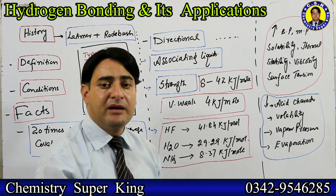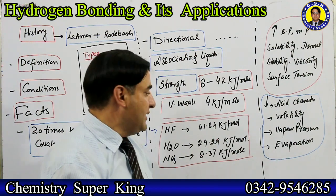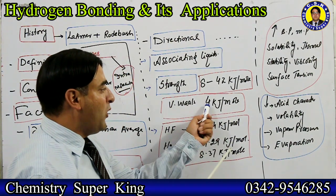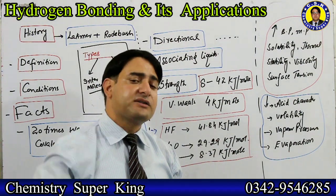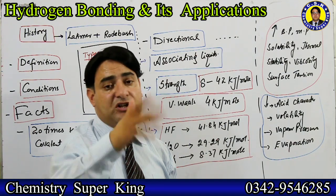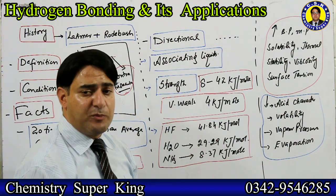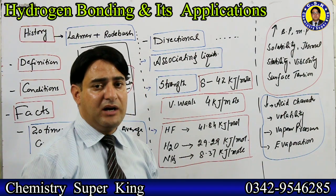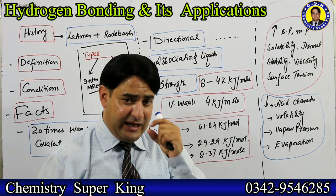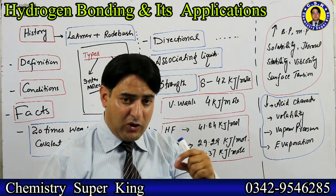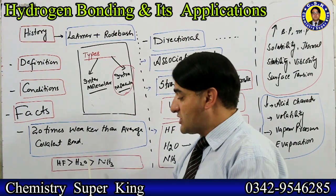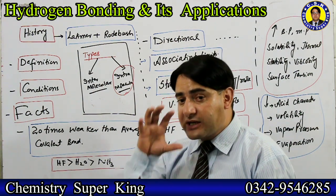Van der Waals forces require a maximum of 4 kJ/mol to break. This means hydrogen bond, being a dipole-dipole attraction, is at least double the strength of van der Waals forces. MCQs often ask in which molecule hydrogen bonding is strongest — HF, water, or ammonia. Remember: the more electronegative and smaller the atom, the stronger the hydrogen bond. So hydrogen bond is strongest in HF compared to water, which is stronger than ammonia.